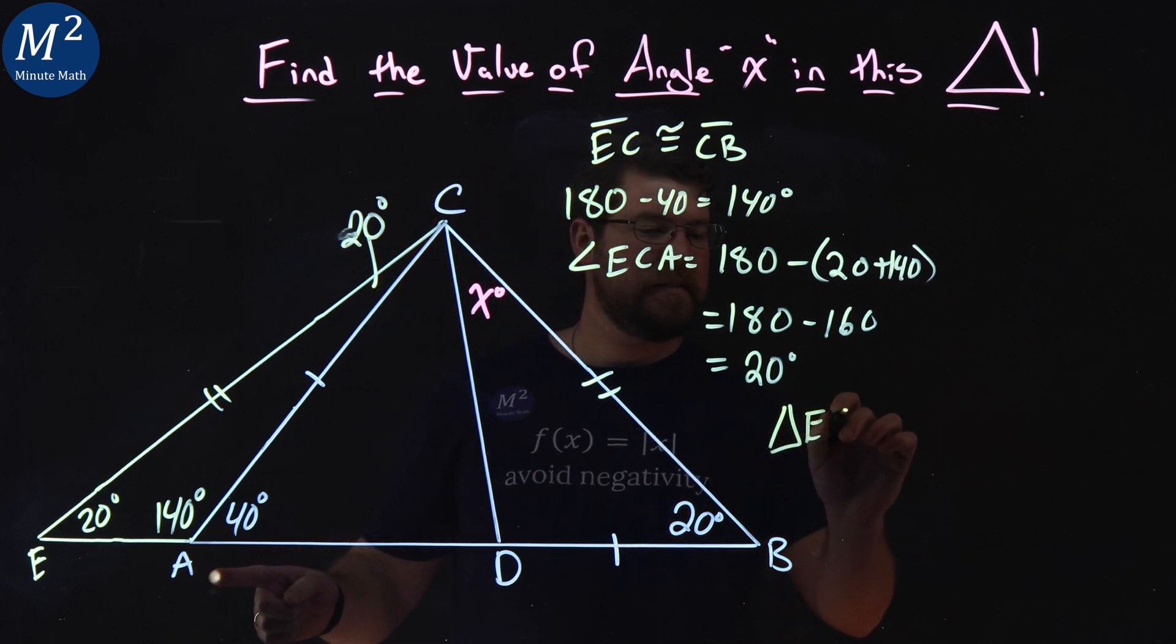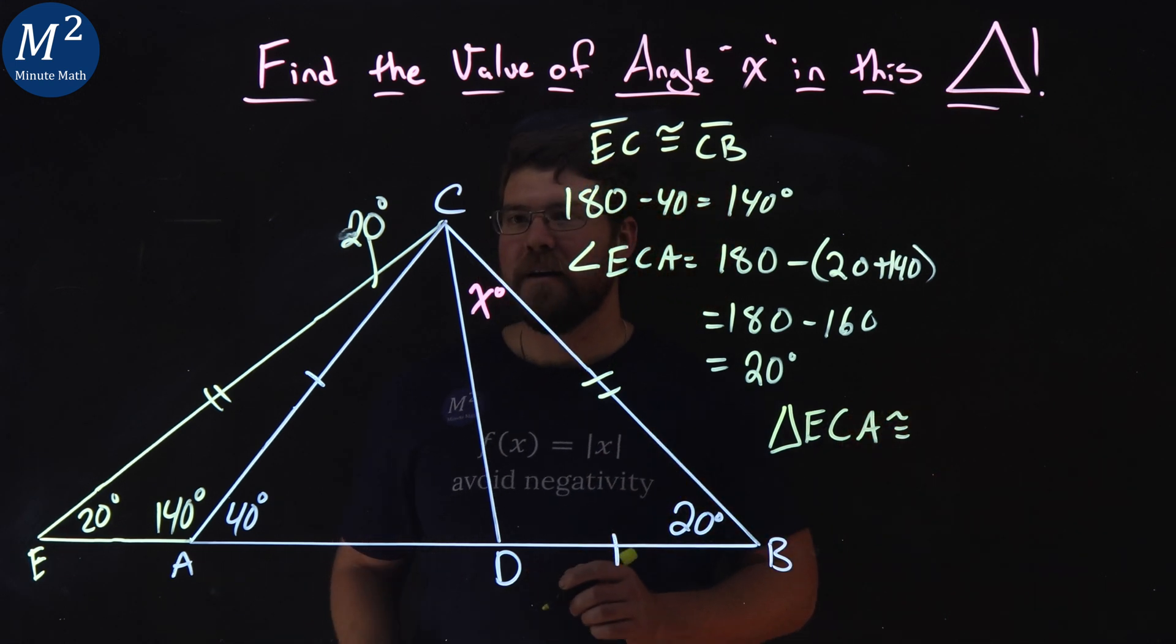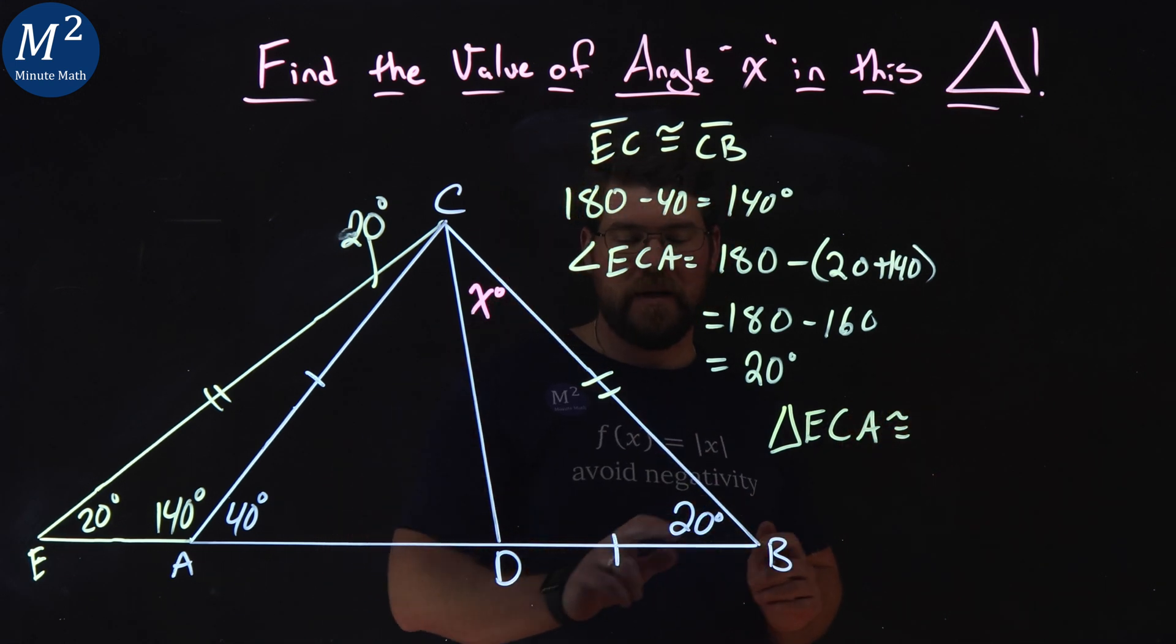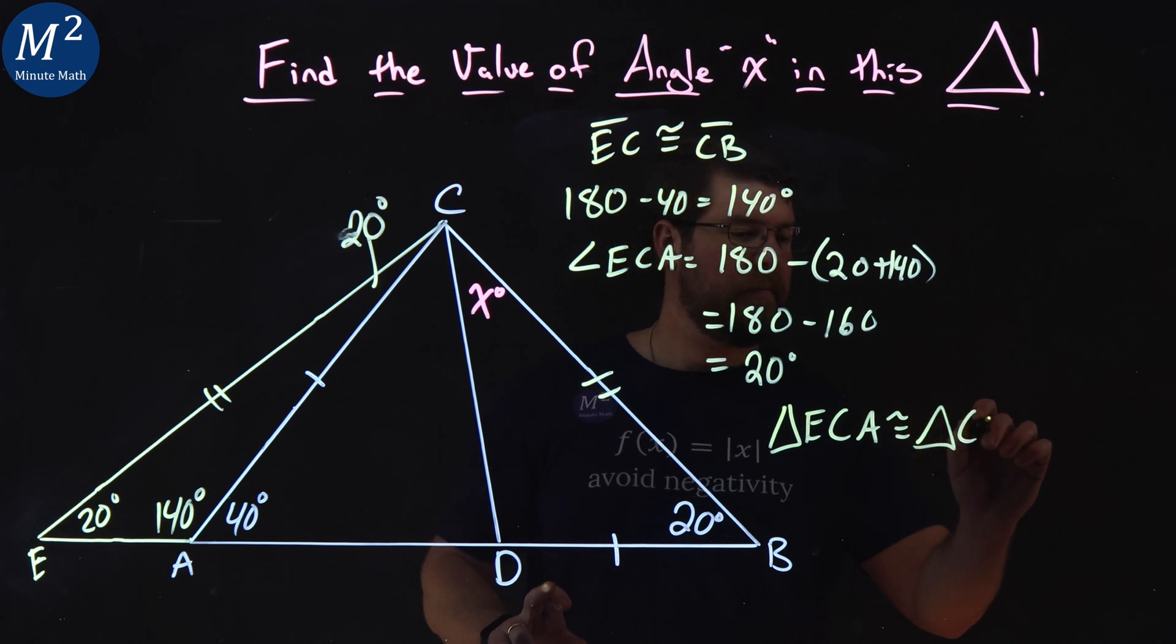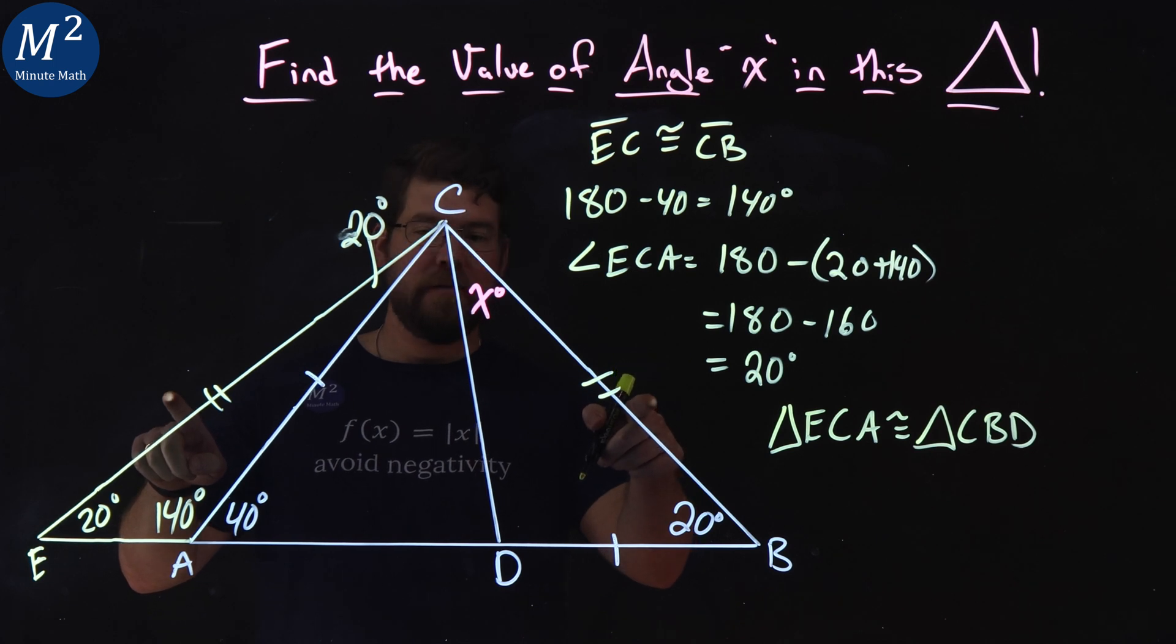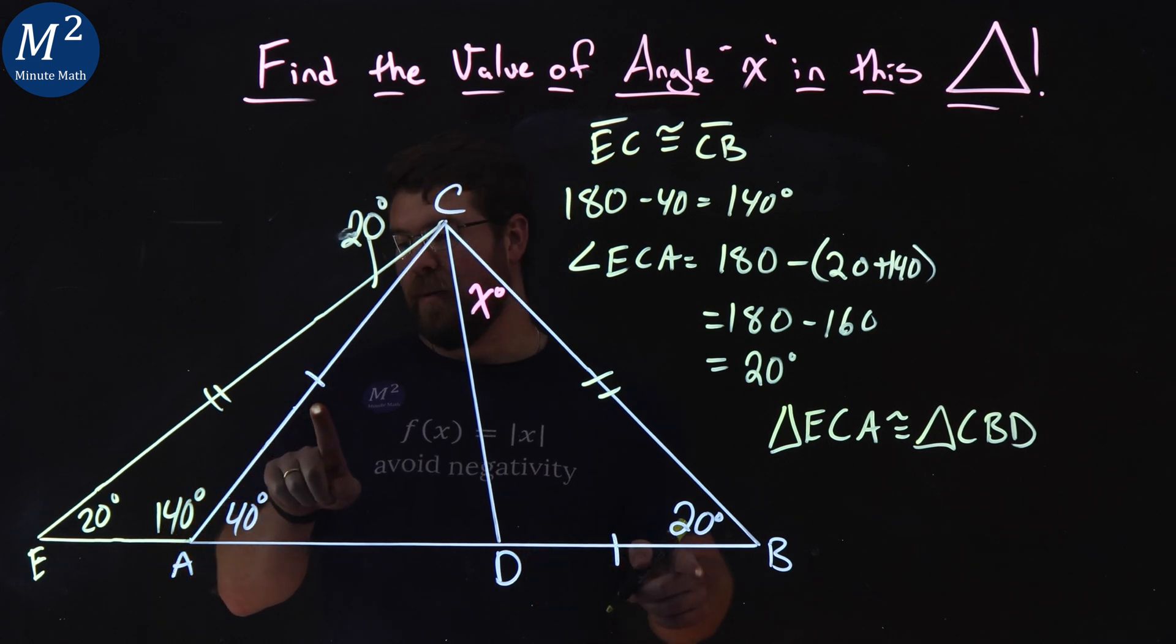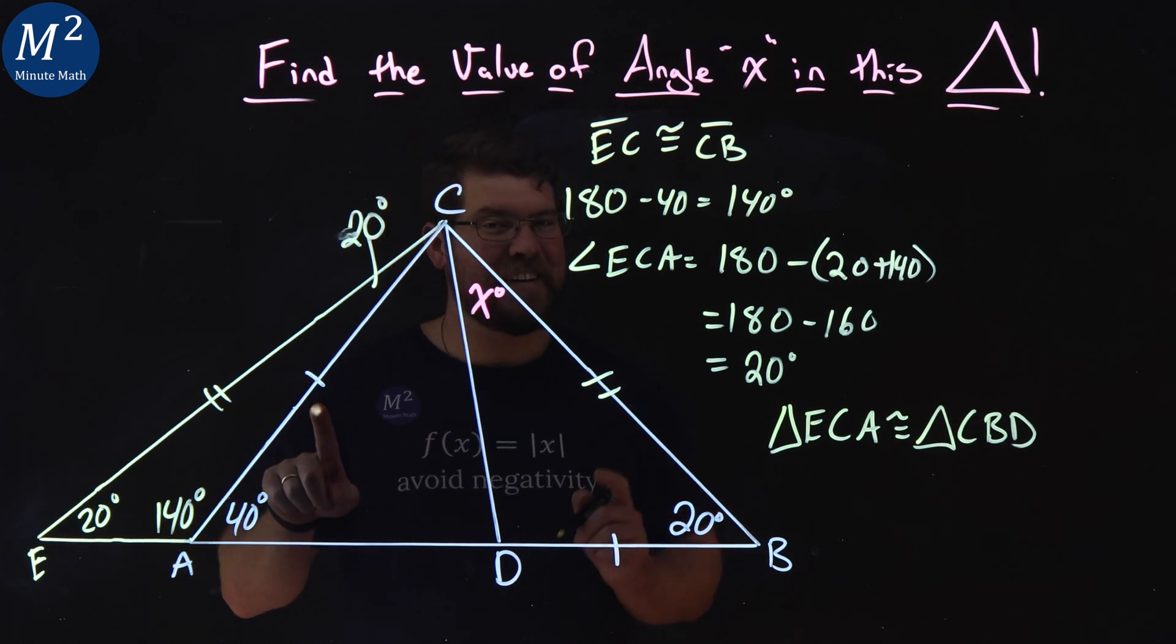Triangle ECA is congruent to triangle CBD. Why? Well, we have a side length, two congruent, or two lines, so they're congruent, angle 20 degrees lines up, then a side length that was the same here. Again, not drawn to scale.